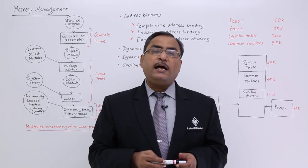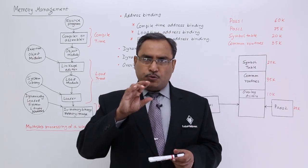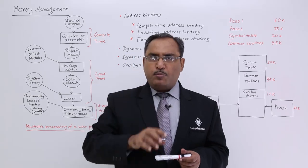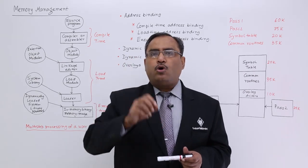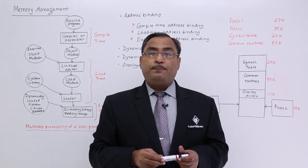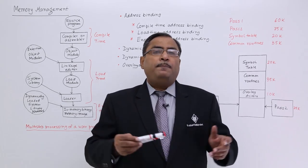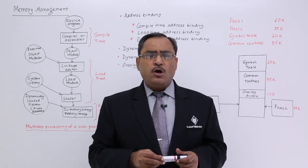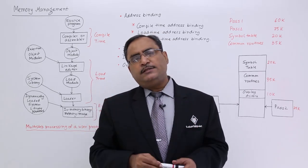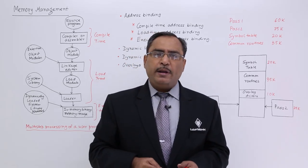What is the main disadvantage of compile time address binding? Suppose the program targeting a certain memory location finds that location is preoccupied by another program. Then a collision will take place — the current program will override the previously existing program in that particular memory block. That is the main disadvantage.